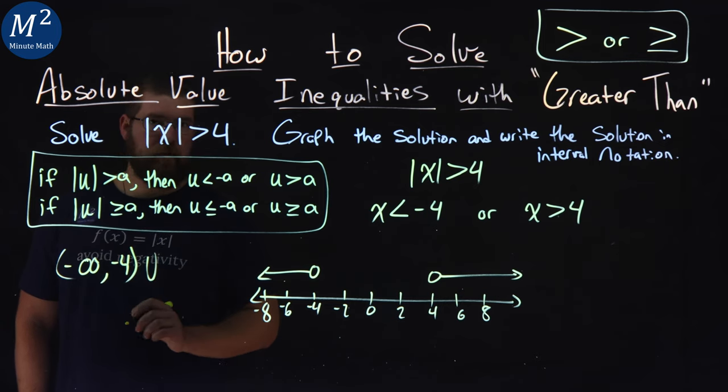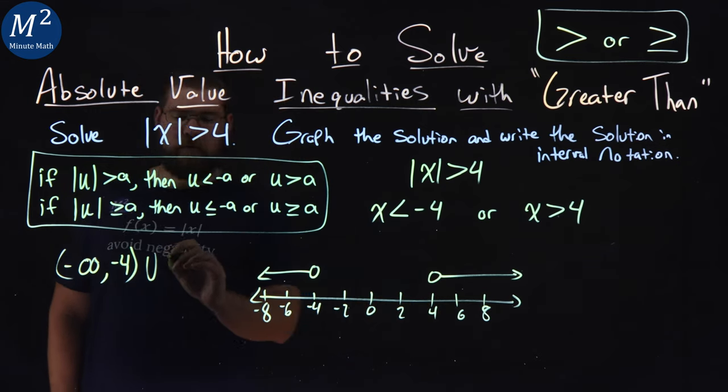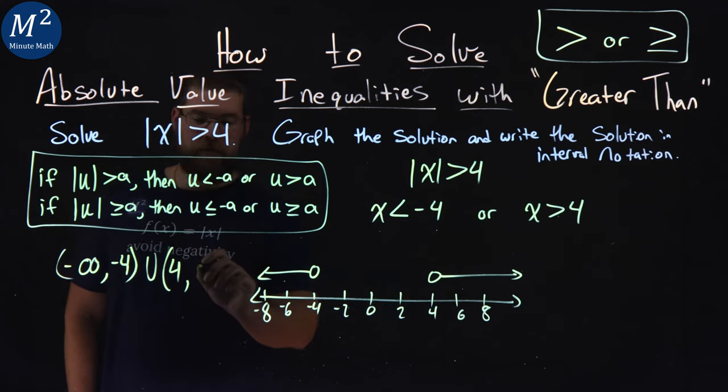Then we have a union between the two. And then we have positive 4, so we have a parenthesis because it's not equal to. And it goes all the way to positive infinity.